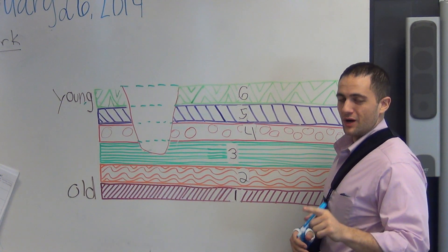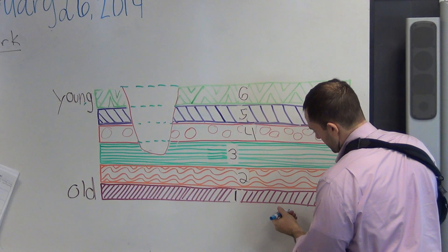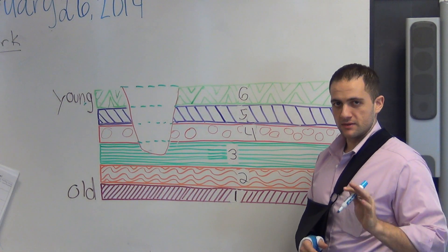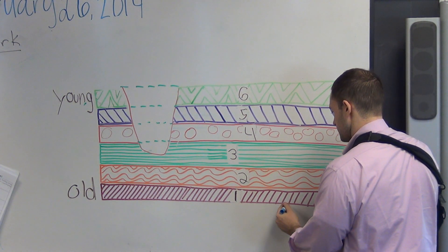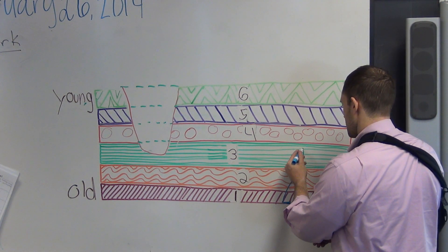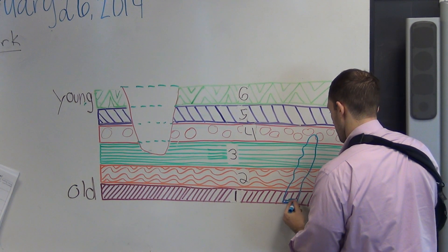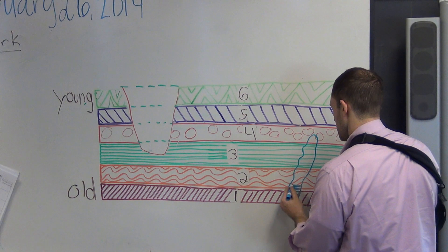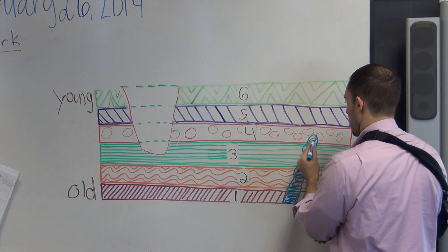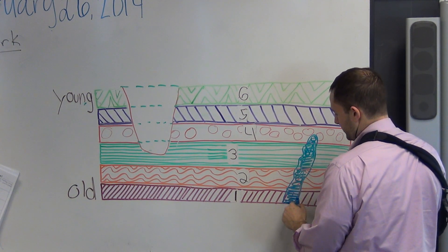This one's called the law of cross-cutting relations, and this says if you have some igneous rock, which is like magma—hope we all know what magma is. Sometimes as the earth changes, you might have areas where magma will start to rise, and when it rises it melts through all these layers.